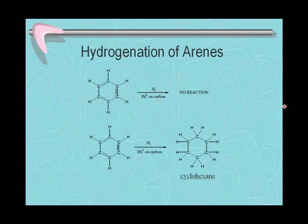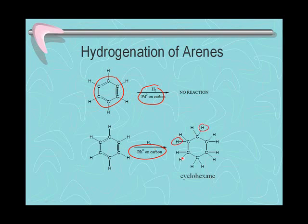The arene ring is quite resistant to hydrogenation. Alkenes are reduced quite readily by hydrogen in the presence of palladium catalysts, but in the case of an arene ring, there's no reaction whatsoever. In order to get the arene ring to be reduced, we must use a specialized catalyst — rhodium metal dispersed on a carbon substrate. With this catalyst, we can add hydrogen across the carbon-carbon double bonds of the arene ring and convert it into a cyclohexane ring.